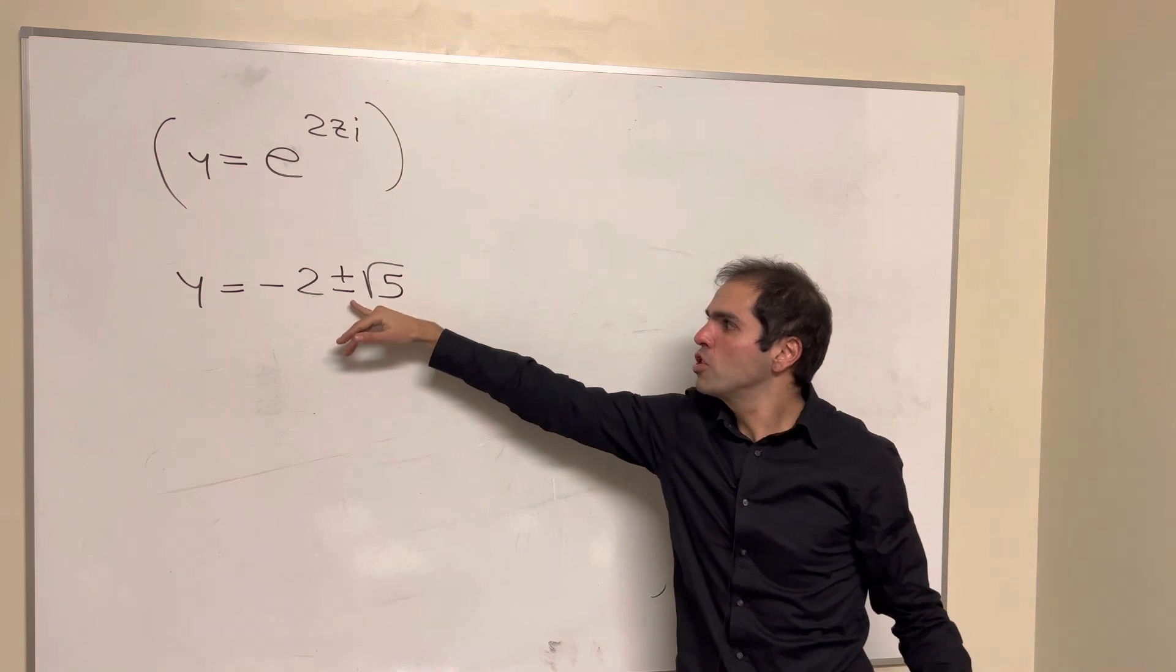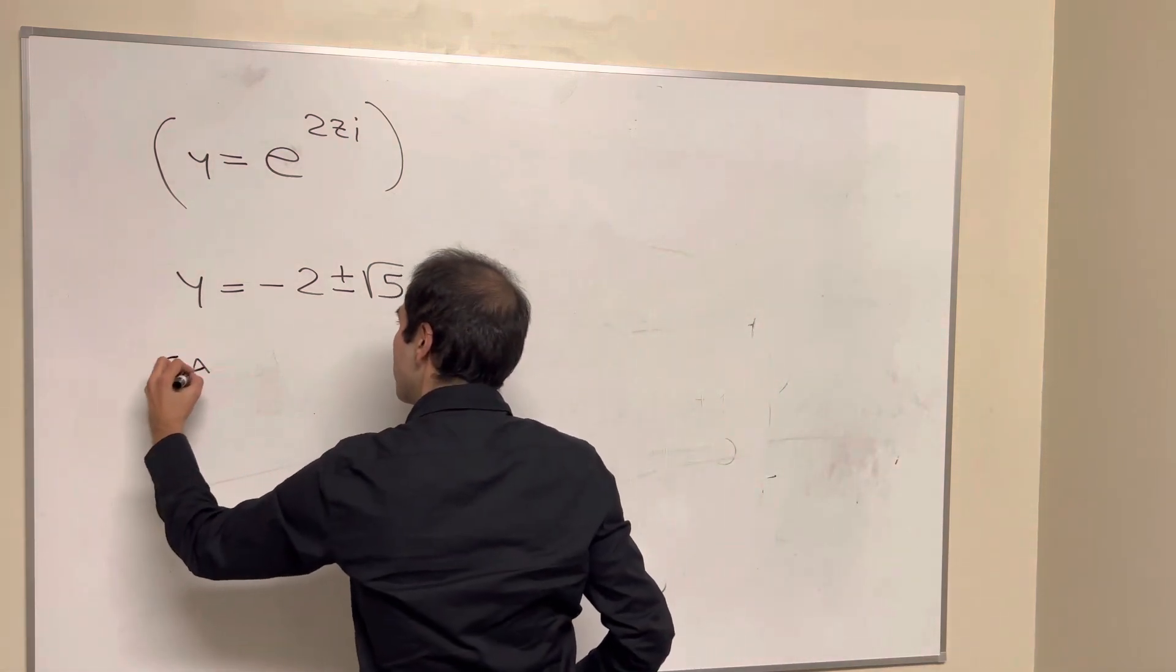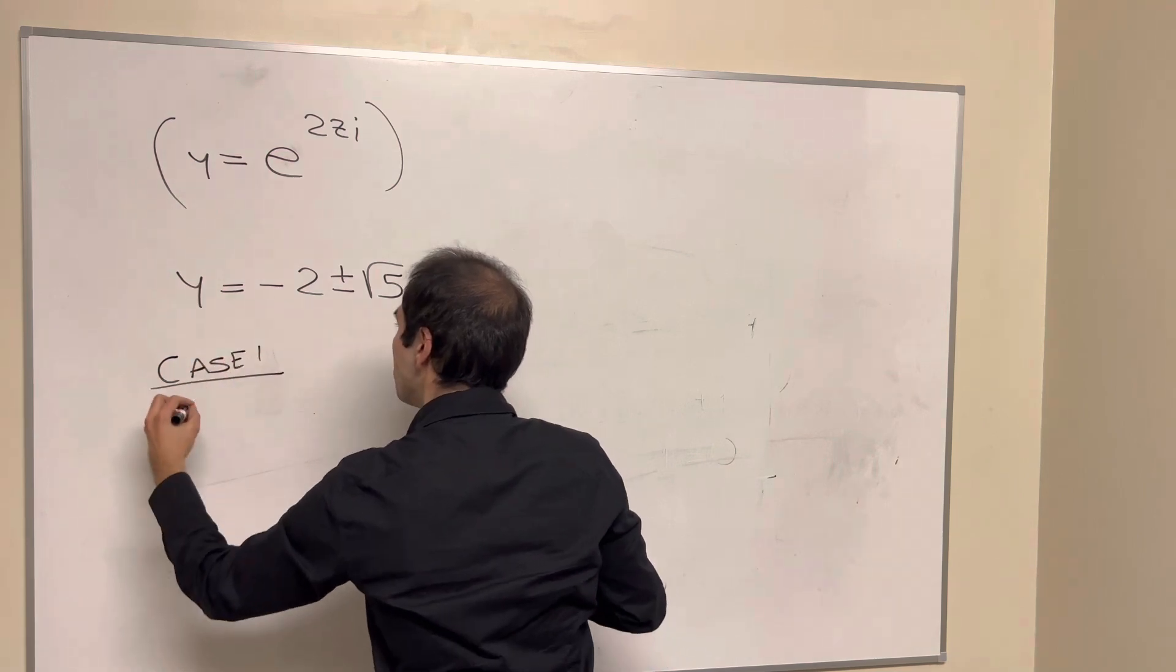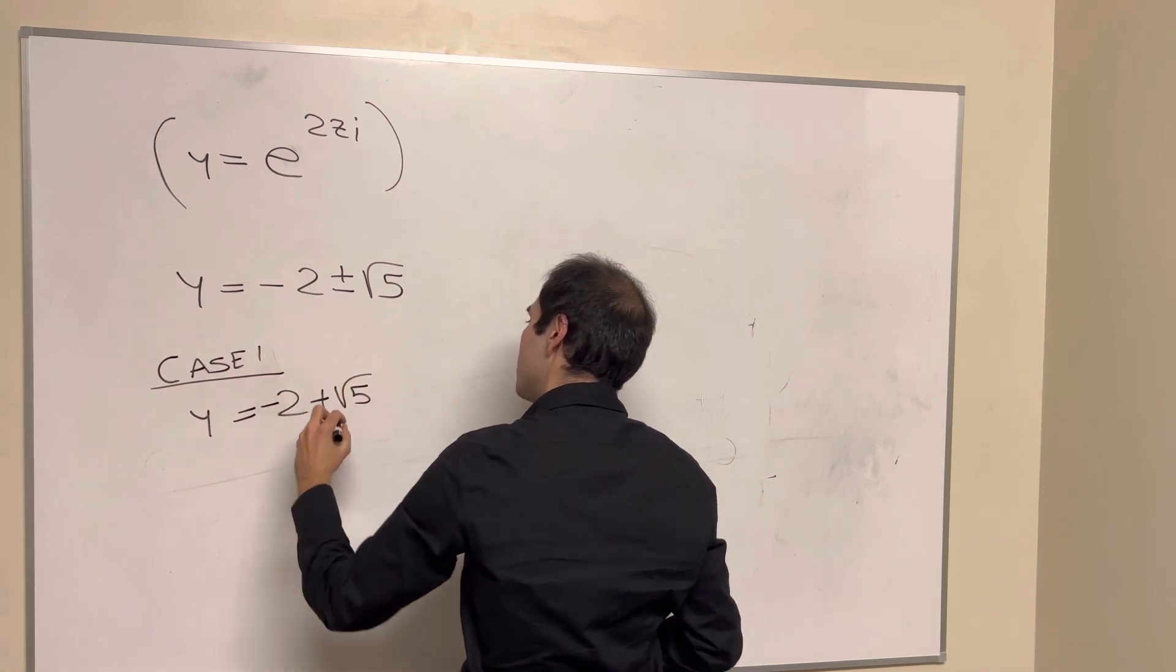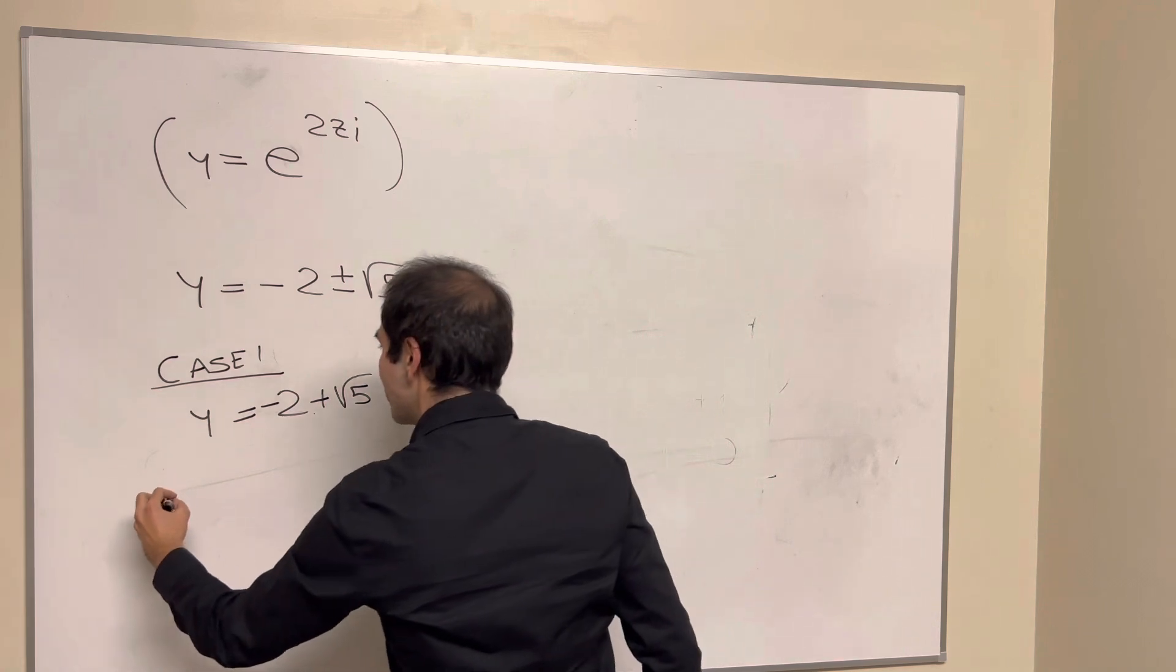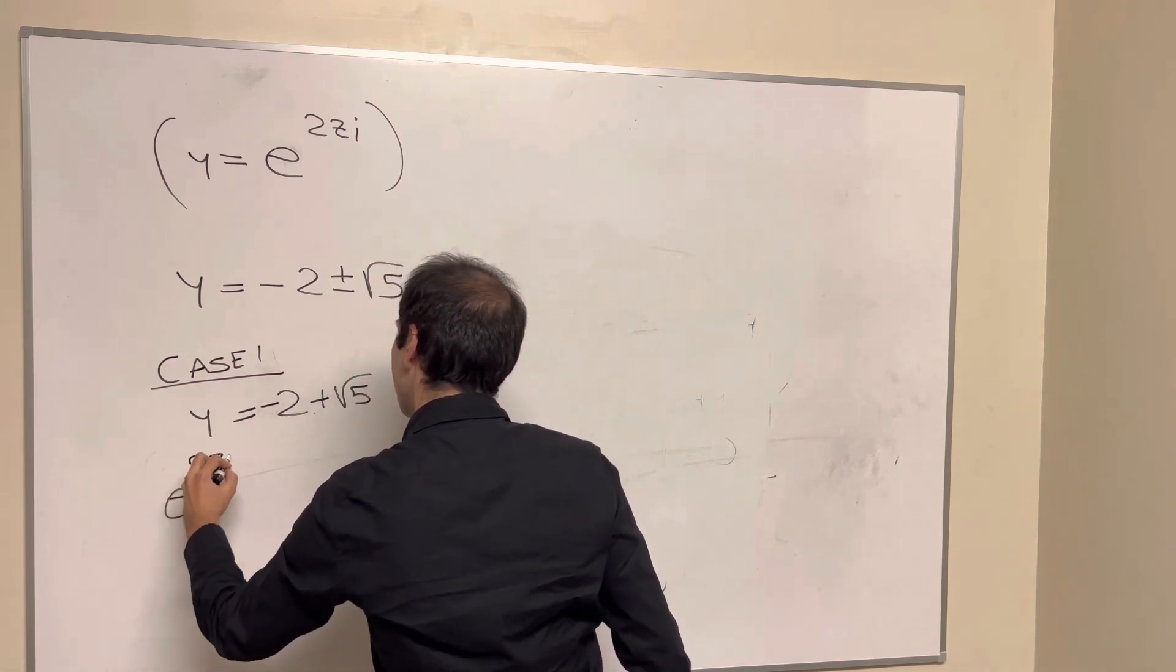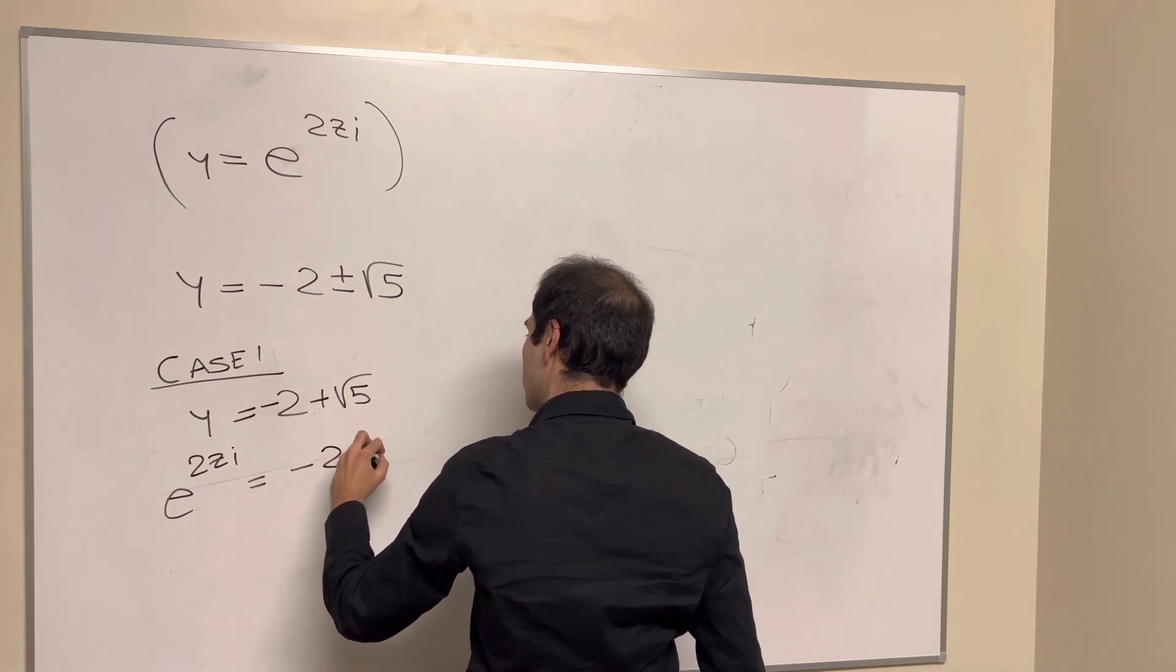So case 1, suppose y is minus 2 plus square root of 5. Now, this is nice because this is positive. So we get e to the 2zi equals minus 2 plus square root of 5.